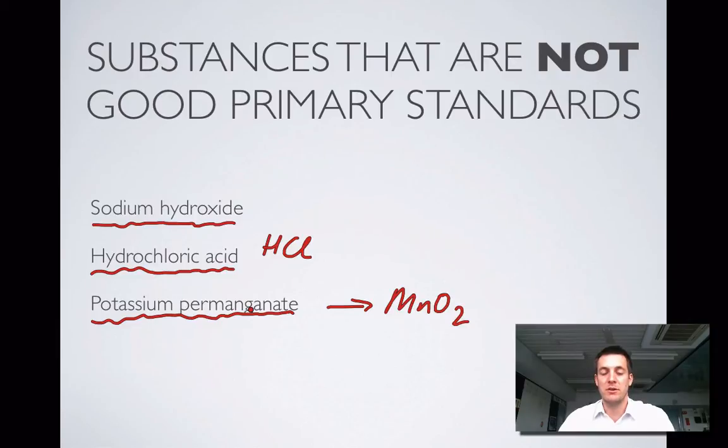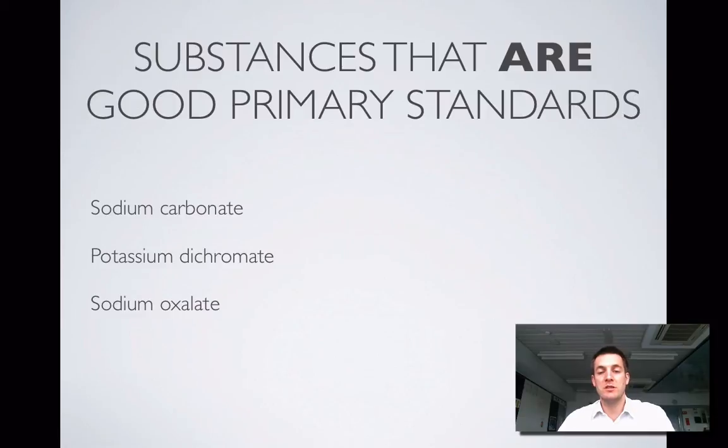Moving on to some substances that are good primary standards. Sodium carbonate (Na2CO3) is a good primary standard used in acid-base titrations because it reacts with acids, so we can titrate acids against it. Quite often we can standardize hydrochloric acid solutions by reacting them with sodium carbonate solutions first. I can't have a standard solution of hydrochloric acid, but if I want to check the concentration of my hydrochloric acid, I can use a standard solution of sodium carbonate to do that. Then, as long as I use my hydrochloric acid soon afterwards, I can be fairly confident its concentration hasn't changed too much.